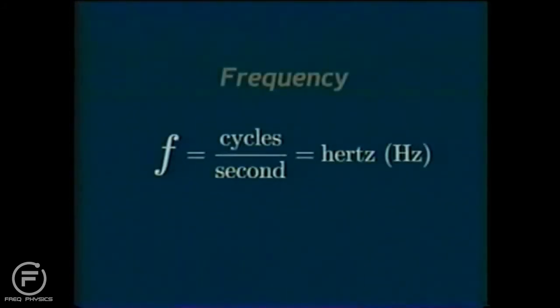Waves also have an associated frequency. Frequency, abbreviated with a lowercase f, is defined as the number of cycles of repetition per second. In other words, frequency is the number of wavelengths that have passed by a stationary point in one second's time. The unit of frequency used here is called hertz, abbreviated Hz. It's defined as the cycles of the wave per second.